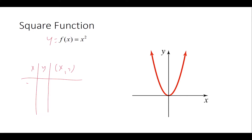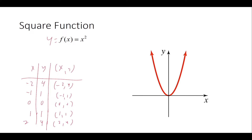When x is negative 2, y is 4. When x is negative 1, y is 1. When x is 0, y is 0. When x is positive 1, y is 1. When x is positive 2, y is 4. Plotting these points reveals the characteristic parabolic shape of the square function.